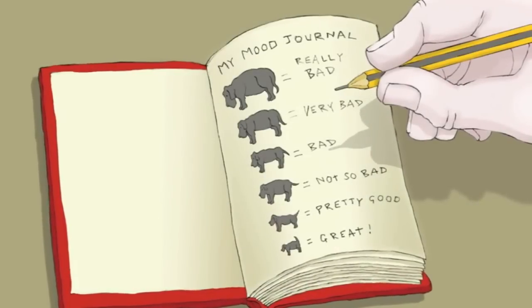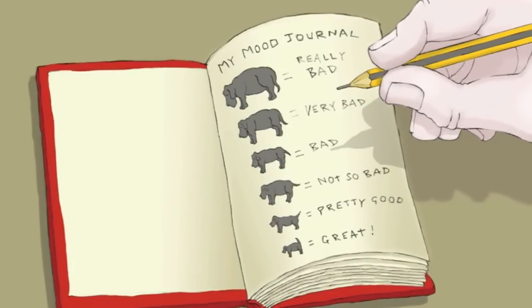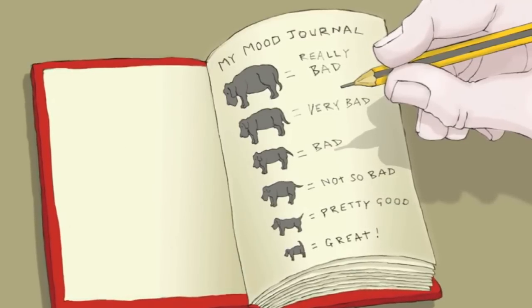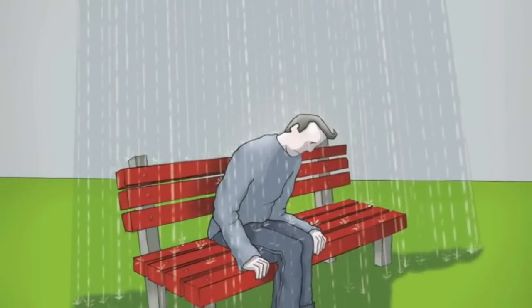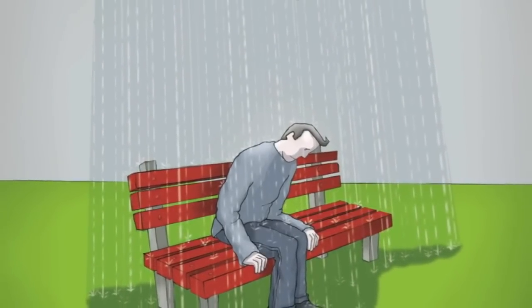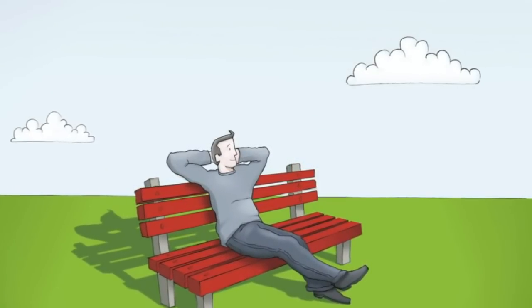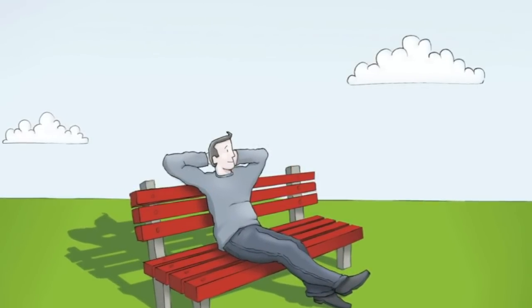Keep a mood journal. Getting your thoughts on paper can be cathartic and often insightful. Also keep track of the things that you have to be grateful for. The most important thing to remember is that no matter how bad it gets, if you take the right steps, talk to the right people, black dog days can and will pass.